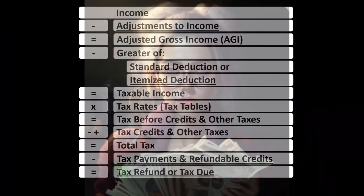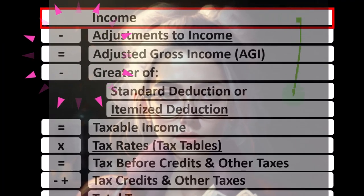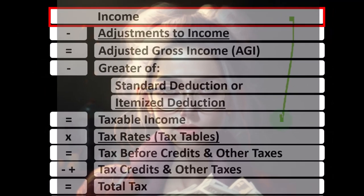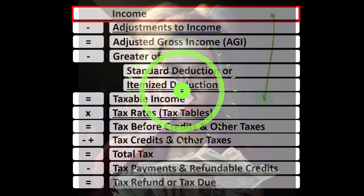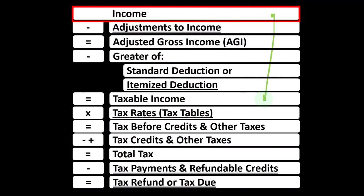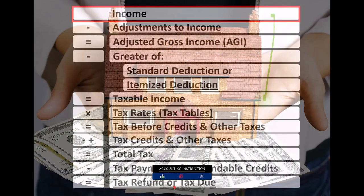Looking at the Income Tax Formula, we're focused on line one income. The first half of the income tax formula is in essence an income statement, but just an outline, with other forms and schedules flowing into these line items. One of those is Schedule E, which is basically an income statement with rental income minus rental expenses, with net rental income flowing into line one income of the income tax formula.